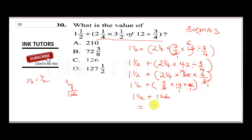Adding the two numbers: 126 plus one and a half gives us 127 and a half. So that is our correct answer, and D is the correct answer here.